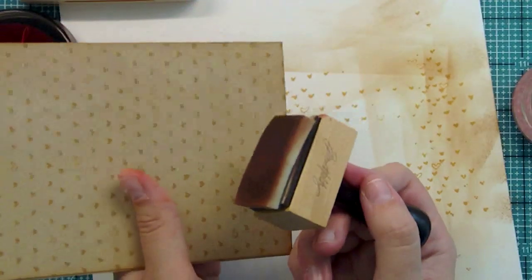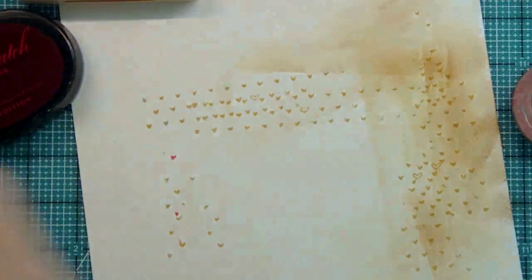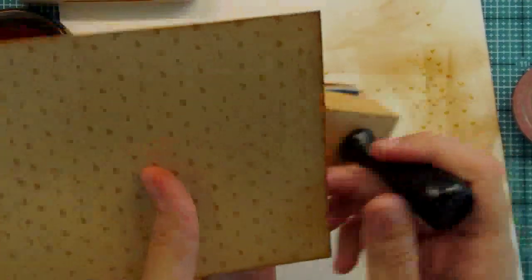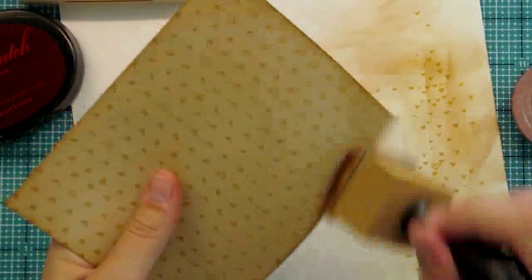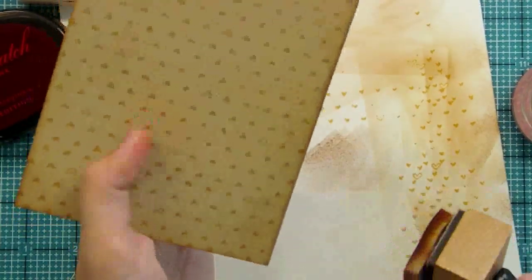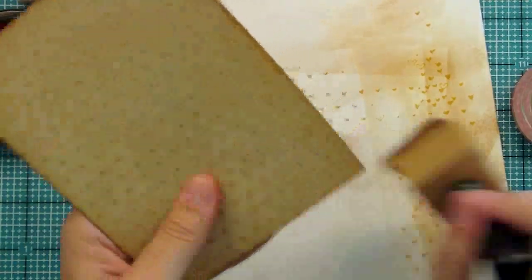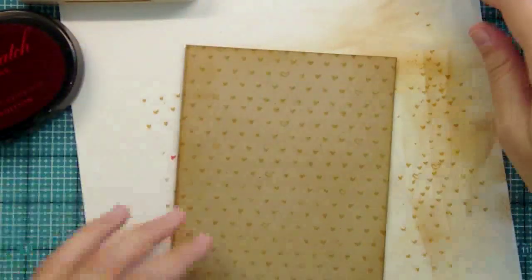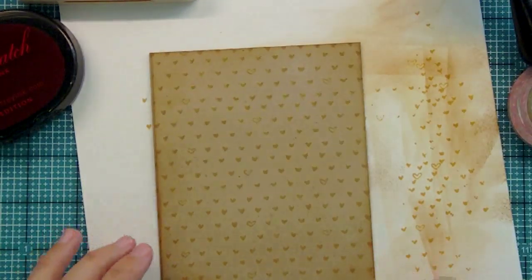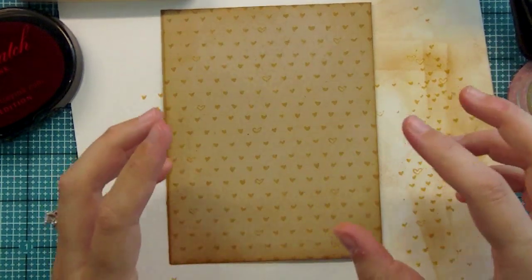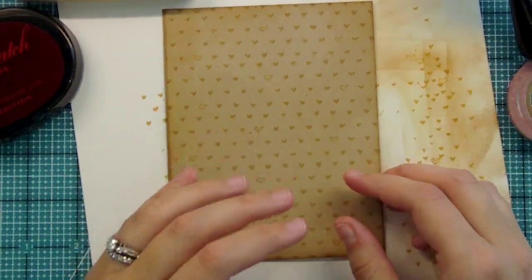I'm just flicking it across the paper now. If you don't have one of these you can use a makeup sponge and that works really well. I used a makeup sponge on the background I did for Hero Arts for the fall card last Tuesday. Those makeup sponges you can find super cheap at the dollar store or CVS or Walgreens. You can see this great subtle background that's ready for you to add your die cuts, your embellishments, anything you might have.